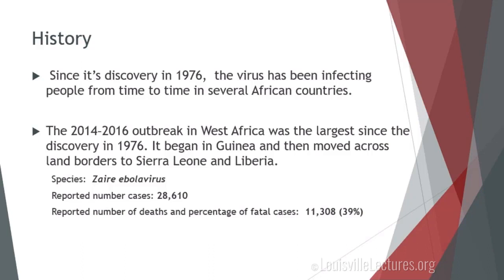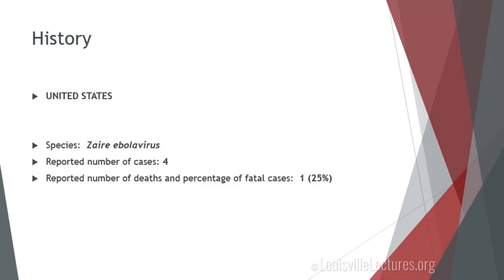Since this discovery in 1976, the Ebola virus has been affecting several countries in Africa, primarily Central Africa. The 2014 through 2016 outbreak in West Africa was the largest since the initial outbreak. It started in Guinea and spread across the borders to Sierra Leone and eventually Liberia. It was found to be the Zaire species. At that time, over 28,000 people were affected with over 11,000 deaths and a death rate of about 39%. During that outbreak, with regards to the United States, there were actually four reported cases, and there was one death.